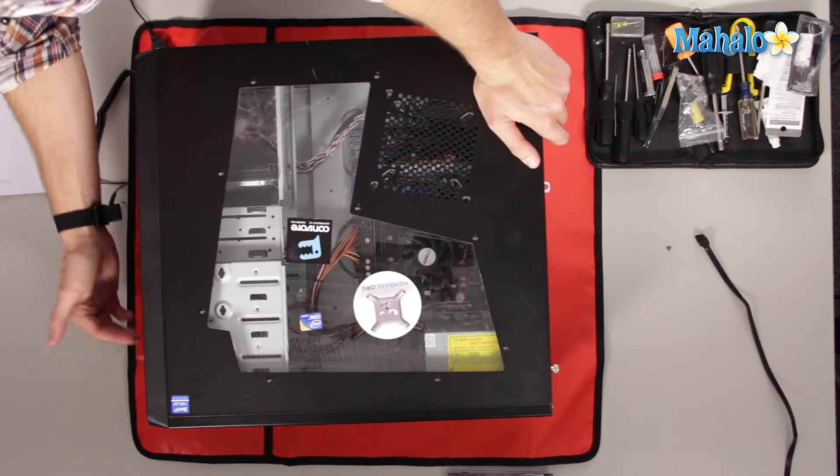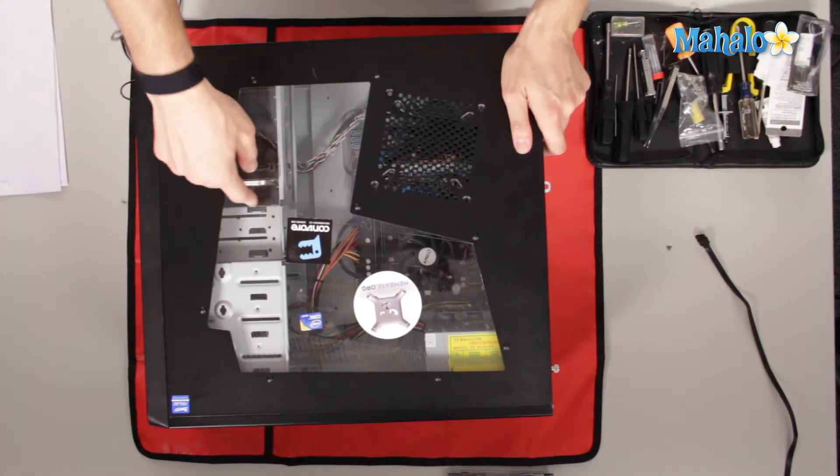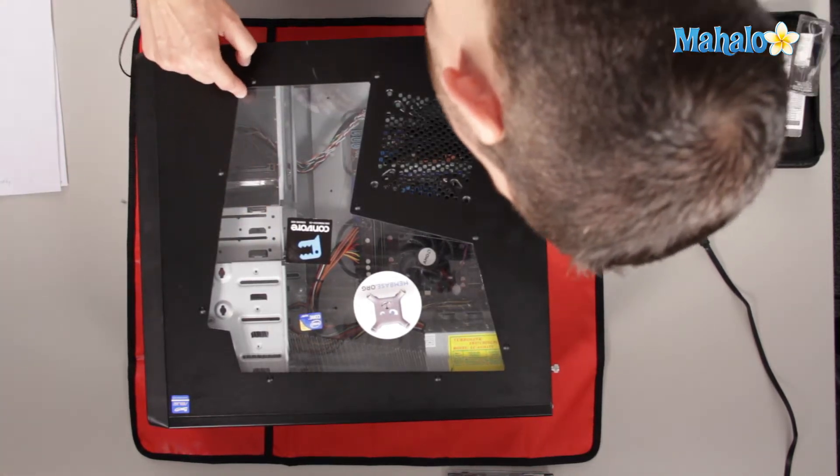But one other thing to talk about is the amount of hardware you can fit inside this mid-ATX style computer case. For instance, we have one, two, three, four drive bays. And we also have one, two, three, four, five, six, seven, eight. Eight bays we can add other things like hard drives or maybe for some wacky reason you still have a zip drive.